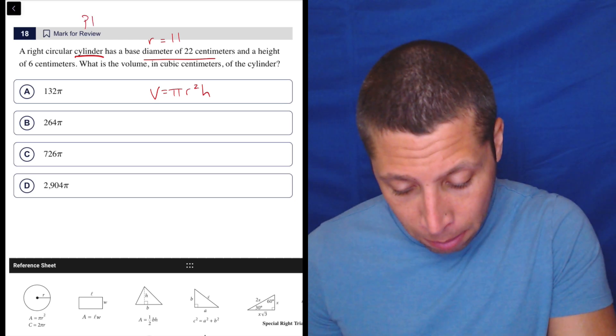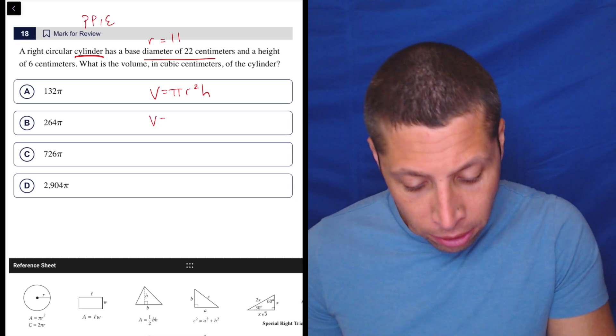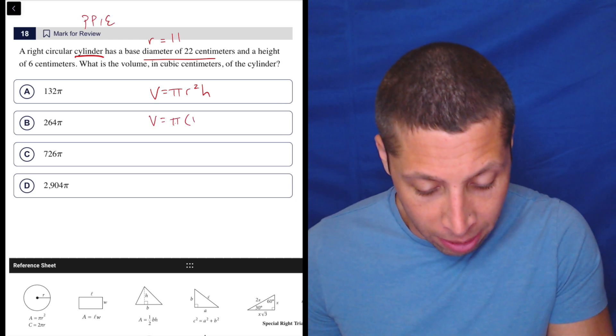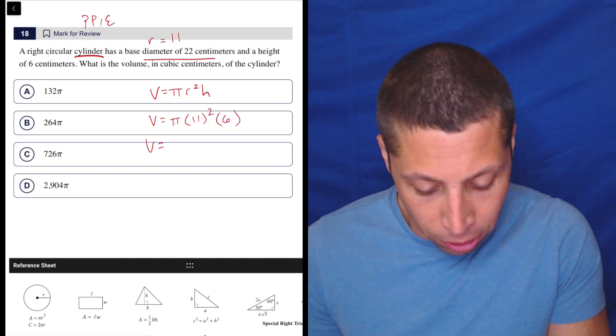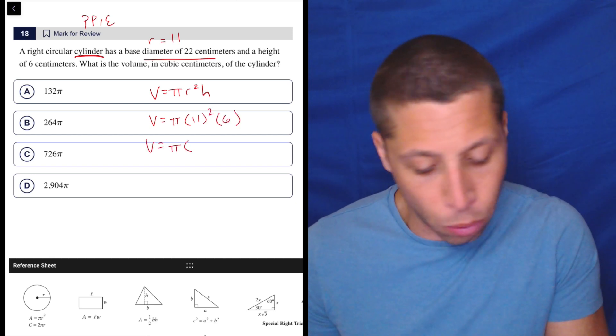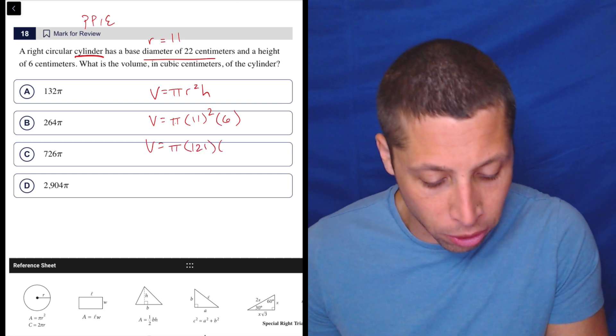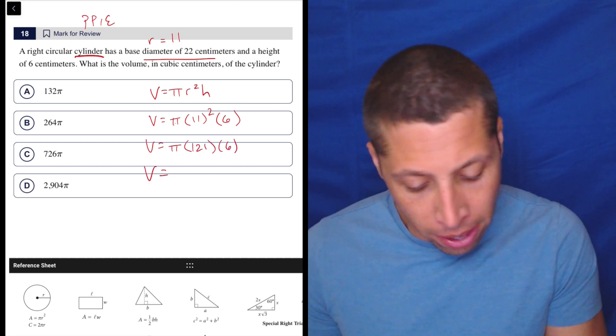Now we just plug points into equations, right? P-P-I-E. So volume is equal to pi times 11 squared. The height, they said, is 6. So volume is pi. If you don't know 11 squared, it's 121. You can always put that in the calculator. Then solve from there.